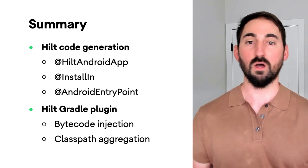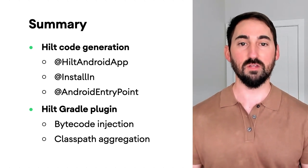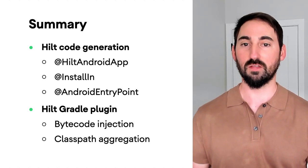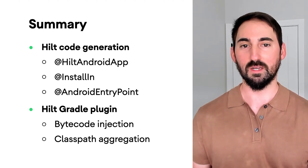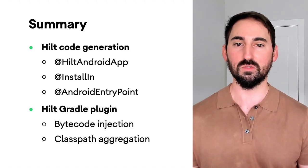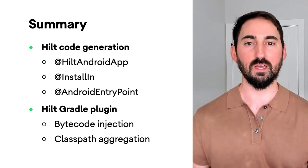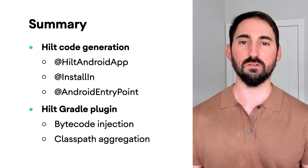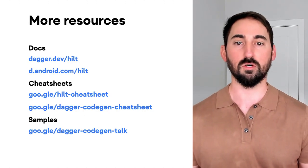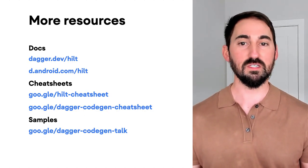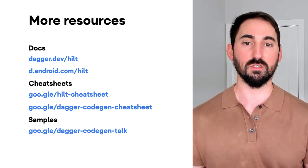In this episode, we've uncovered how the various Hilt annotations work together to generate code. We also looked at the Hilt Gradle plugin and saw how it works behind the scenes using bytecode rewriting and classpath aggregation to make using Hilt safer and easier. If you want more information on Hilt, visit these sites here to read up on the latest information and guides. Thanks for listening and keep an eye out for more Mad Skills episodes to come.